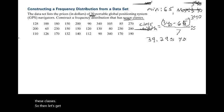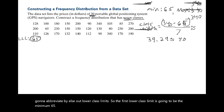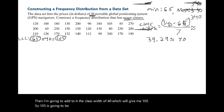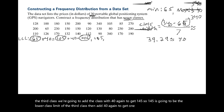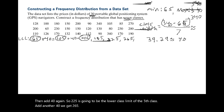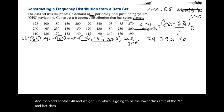Now find the lower class limits. The first lower class limit is the minimum, 65. Add the class width of 40 to get: 105, 145, 185, 225, 265, and 305. So the lower class limits for all seven classes are 65, 105, 145, 185, 225, 265, and 305.